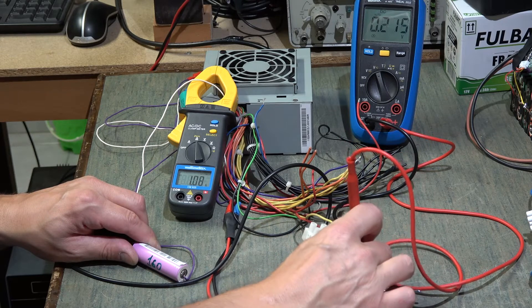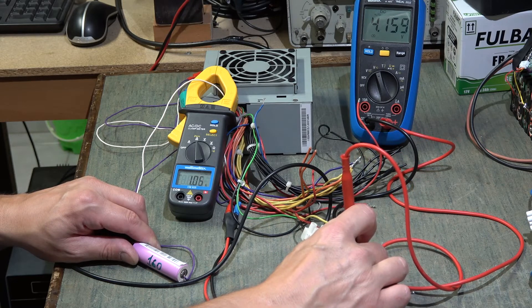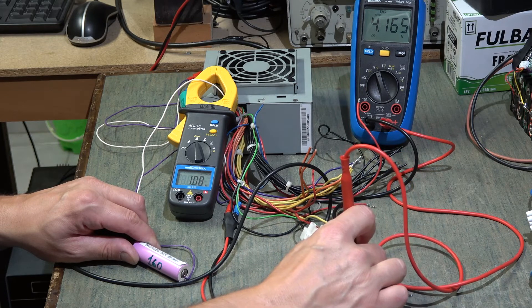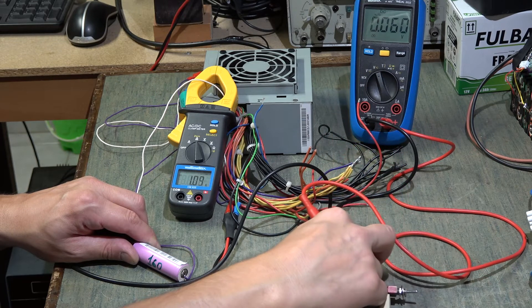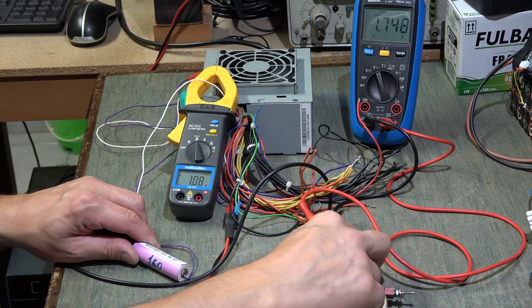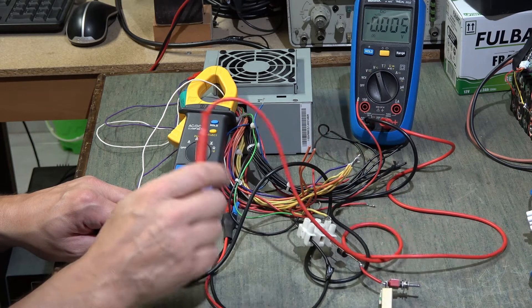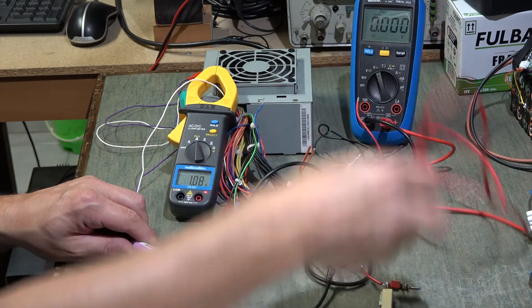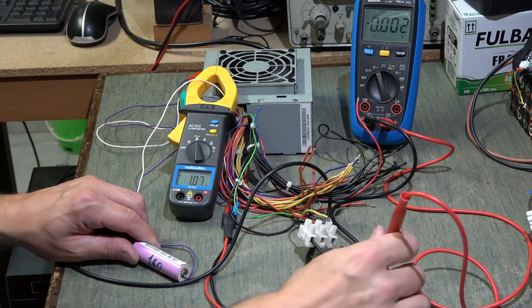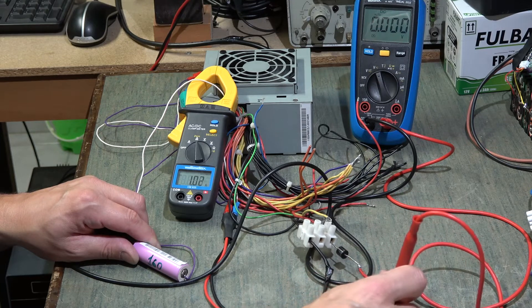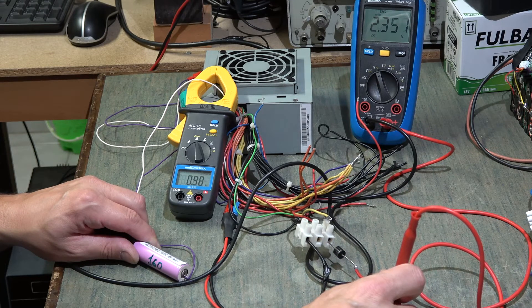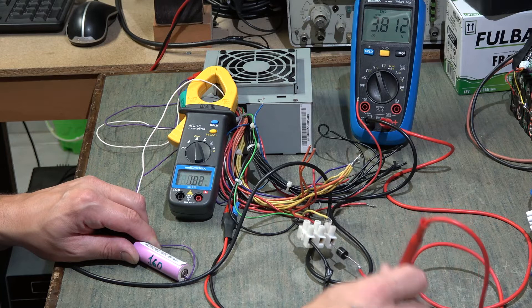Immediately after the diode we have our 4.2 to 4.50 volts. The diode is a little cold, it keeps its temperature.